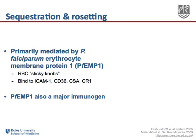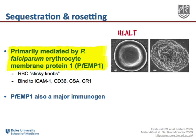Sequestration and rosetting deserve further mention because they're one of the more fascinating features of parasite biology. Both phenomena are thought to be mediated primarily by plasmodium falciparum erythrocyte membrane protein 1, or PFEMP1, a parasite-derived protein that is exported across several cell membranes to be inserted on the surface of the infected red blood cell as so-called sticky knobs. You can see these in the top two pictures — on the left a healthy red blood cell, and on the right a plasmodium falciparum infected red blood cell that is not only misshapen but also studded with knobs full of PFEMP1. These knobs are thought to mediate the binding of infected red blood cells to a variety of ligands in the endothelium and other end organs.